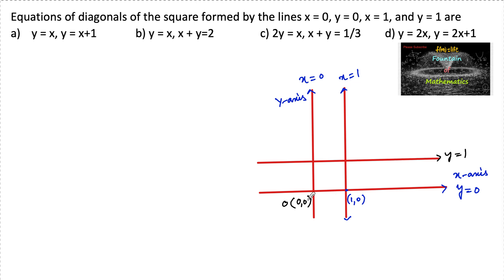0, 0 say this is A; 1, 0, B; it's 1, 1 and say this is C; 0, 1. So diagonals, so you can draw the diagonals here.